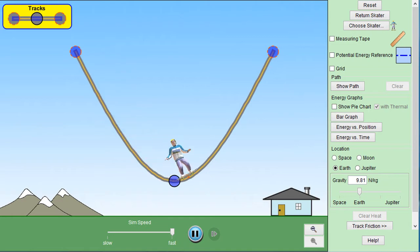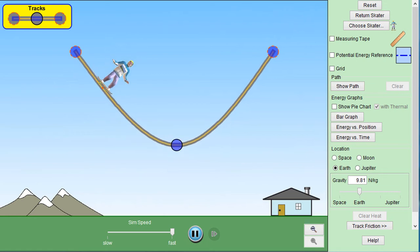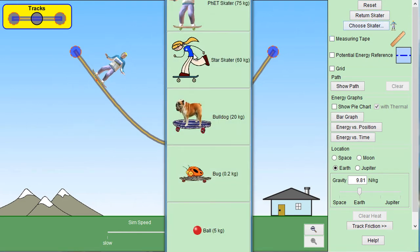So here's what you'll see when you first open it up. You have a skater going back and forth. Keep in mind that you can change the track and you can also change the skater. You can pick Superstar Girl, Bulldog, Bug or Ball. Let's go back to Ken.